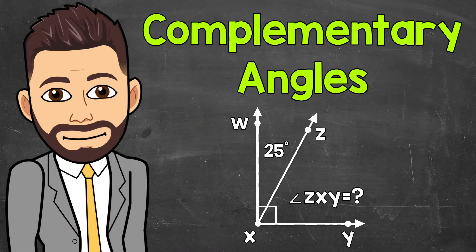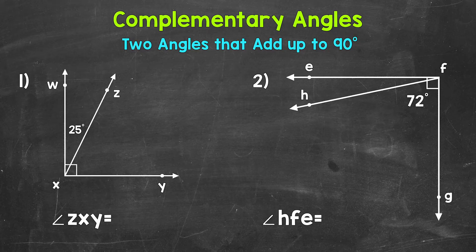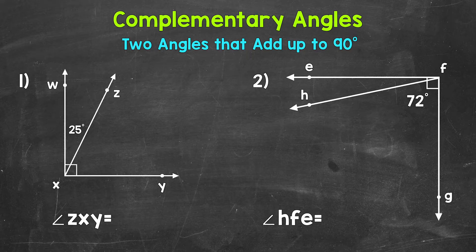Welcome to Math with Mr. J. In this video, I'm going to cover complementary angles. Now, complementary angles are two angles that add up to 90 degrees. So if the sum of two angles is 90 degrees, they're complementary.